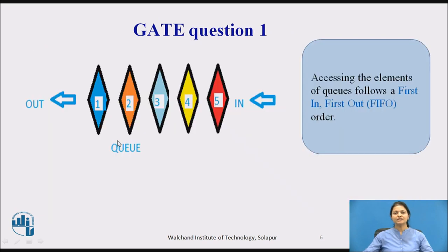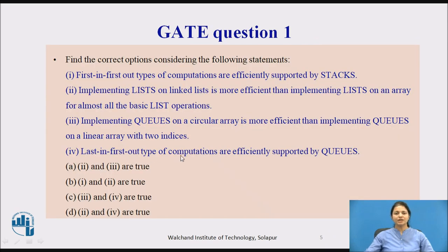For the queue, the concept is that elements are accessed in First In First Out manner — whatever data enters first comes out first. So Last In First Out computations are not efficiently supported by queue. Options involving LIFO for queue are wrong. Only option A is the correct answer.